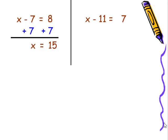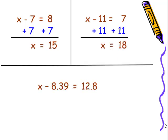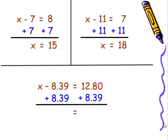When we take a look at this one, you may want to pause the video and try it yourself. We're going to add 11 to both sides. On the left-hand side, the minus 11 and the plus 11 will cancel each other out, leaving us with x equals 18. On this particular one, we're going to add 8.39 to both sides of the equal sign. On the left-hand side, we're just going to have x. On the right-hand side, we'll add a zero to line up our numbers. 0 plus 9 is 9, 8 plus 3 is 11. Bring down your decimal. 1 plus 2 plus 8 is 11, and 1 plus 1 is 2.